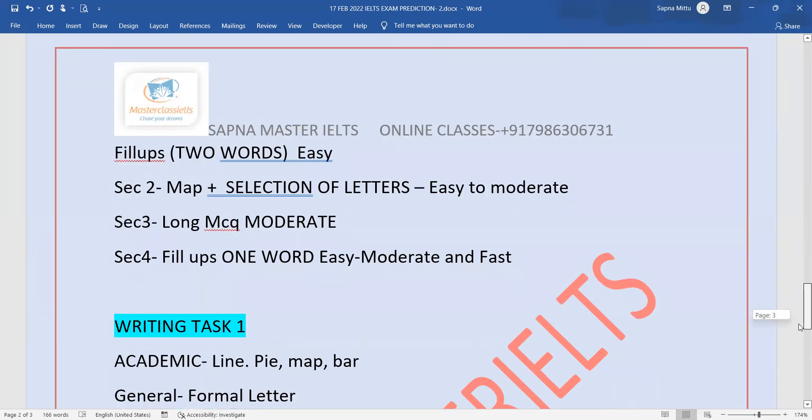Coming to Task 1 for Academic, it could be line, pie, map, or bar—or process chart. Do this carefully. The PDF already sent on Telegram—practice from that because its chances are high. And yesterday I made a Task 1 video which was on the prediction—watch that for sure.